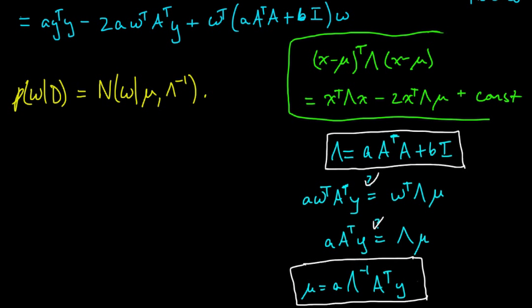We were just computing the posterior distribution on the w vector under linear regression. We were doing Bayesian linear regression, and we got the posterior distribution on w given the data. And things went kind of quick there at the end, so we need to tie up a couple loose ends here.